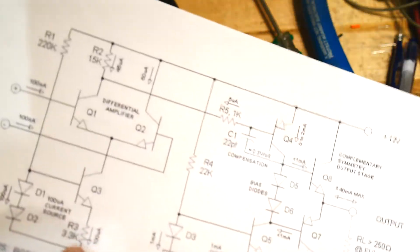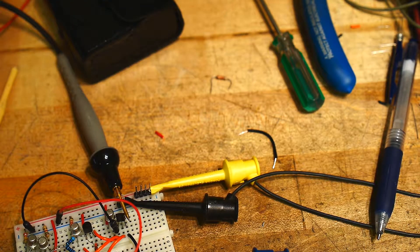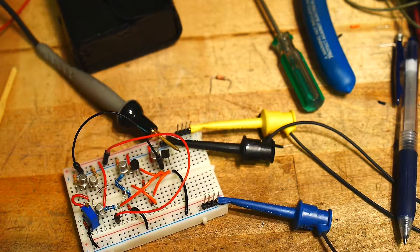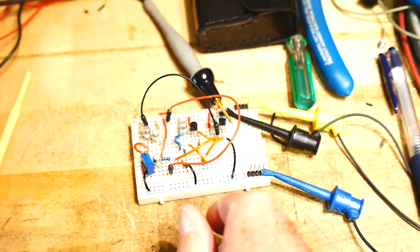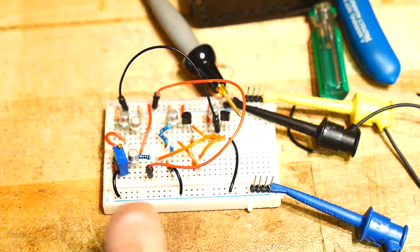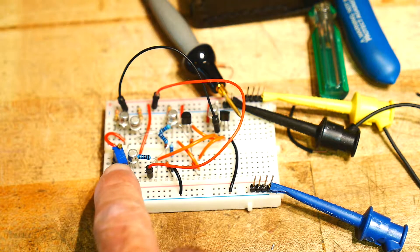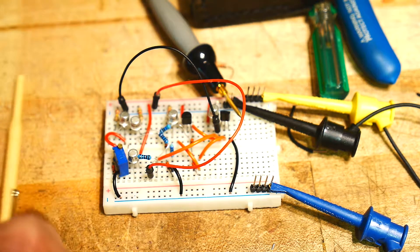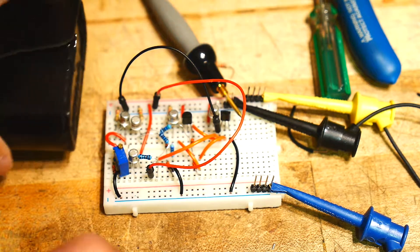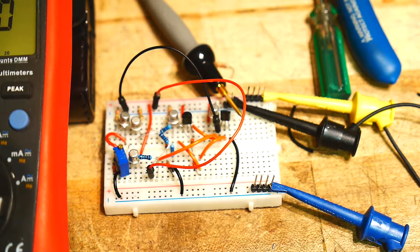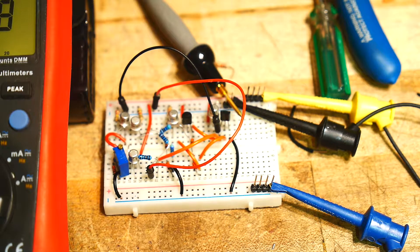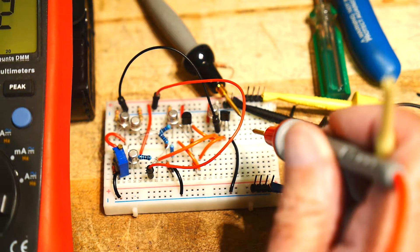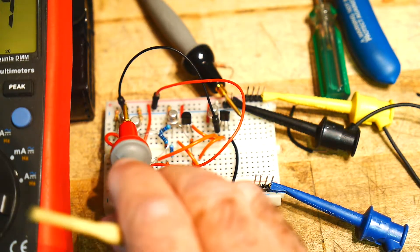So instead of the 3.3k resistor, I put in a potentiometer. Everything's in circuit, so I've replaced the 3.3k with a 10k pot. It's a 10-turn, so I have good adjustability there.